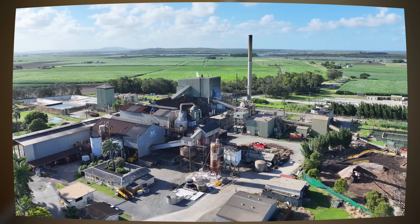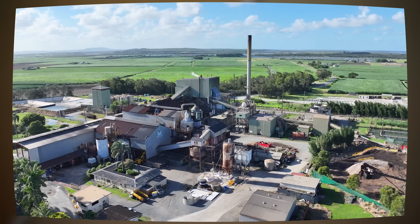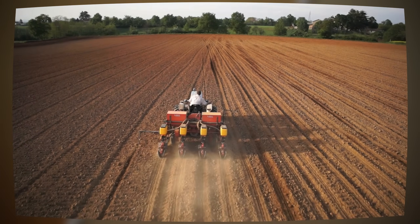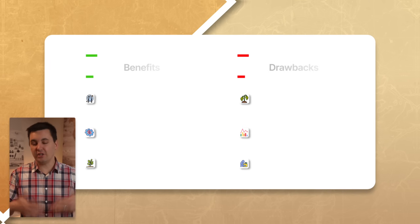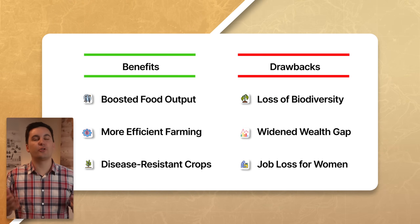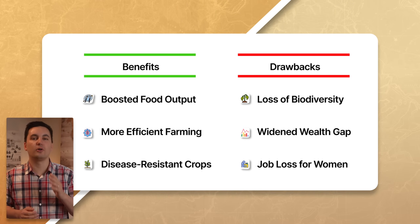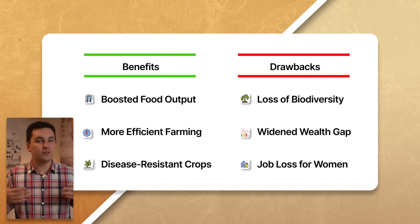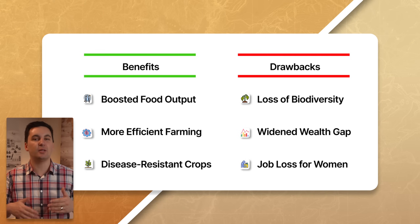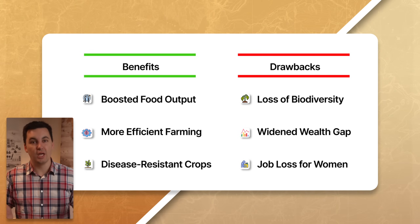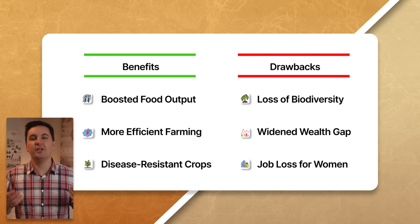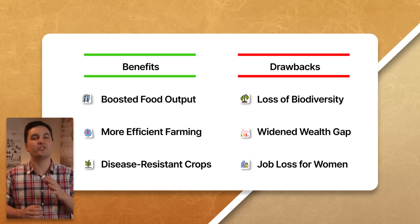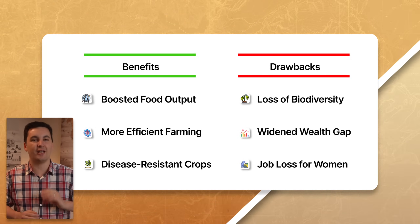This is because large agro-businesses often controlled the high-yield seeds and chemical fertilizers. At the end of the day, we can see that the Green Revolution increased the world's food security and transformed how we as a society produce food, but it also created some new environmental and societal issues that still impact society today.